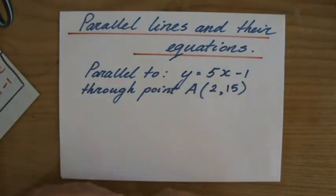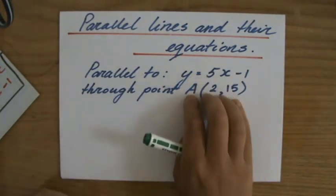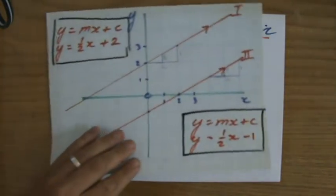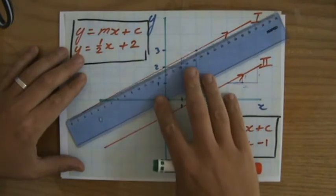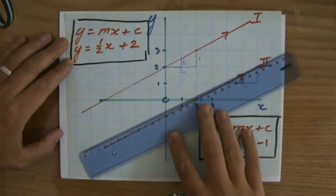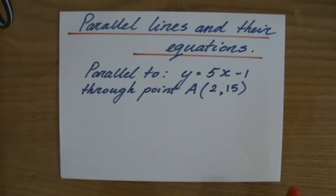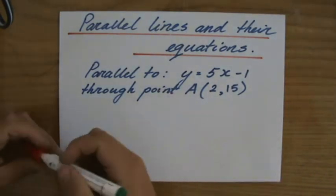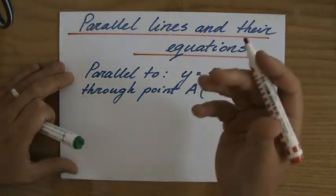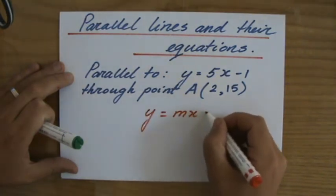I need to construct the equation of a line. They give me another line, it's parallel to that line, and they give me a point. I really enjoy those questions because we already understand from the previous video that parallel lines have the same gradient — they're equally as steep. So I'm really combining all the knowledge I have already. What is the general equation of a line in gradient-intercept form? y equals mx plus c.